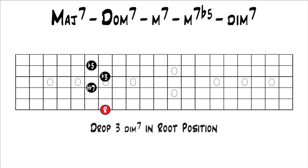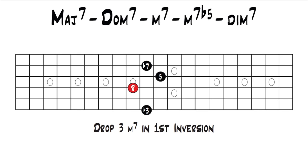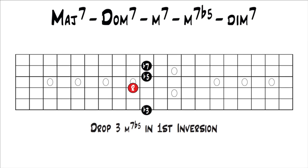This would work for any inversion as well. I just showed you in root position, but if we look at a major 7 drop 3 chord in first inversion, the exact same thing applies. To get to a dominant 7th chord, we find where the 7 is and move that down half a step to a flat 7. So we move that down and now we have a drop 3 dominant 7 in first inversion. To get to a minor 7 chord, you find the major 3rd and move that down half a step to a flat 3 or minor 3rd, giving you a drop 3 minor 7 in first inversion. To get to a minor 7 flat 5, you find the 5th and move it down half a step to give a flat 5 or diminished 5th, giving you a drop 3 minor 7 flat 5 in first inversion. Then to get to a diminished 7th, you find the flat 7 and move it down half a step to a double flat 7 or diminished 7th, giving you a drop 3 diminished 7 in first inversion.